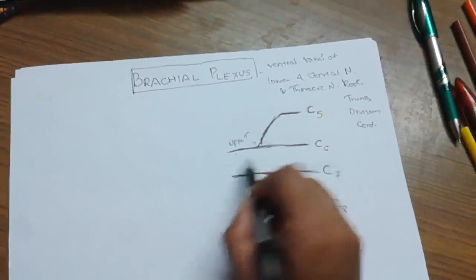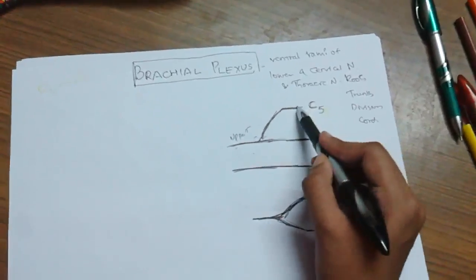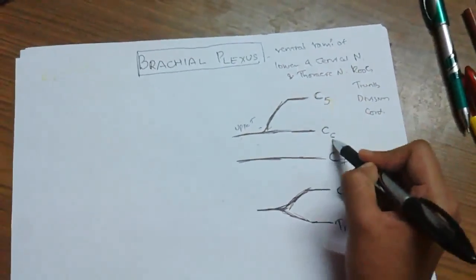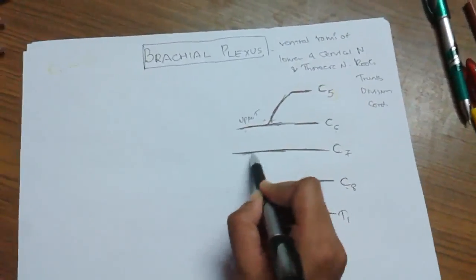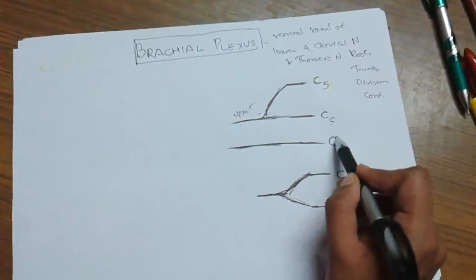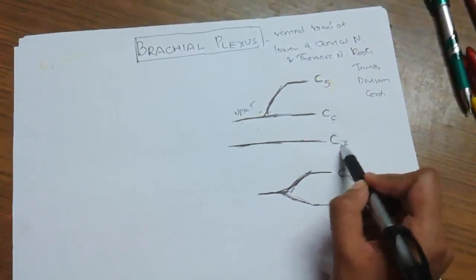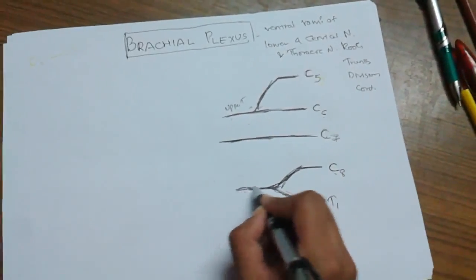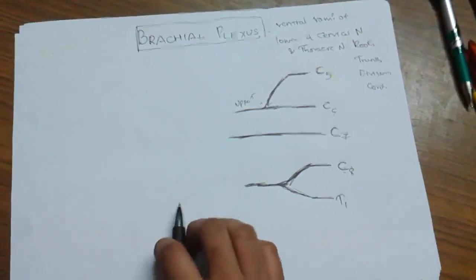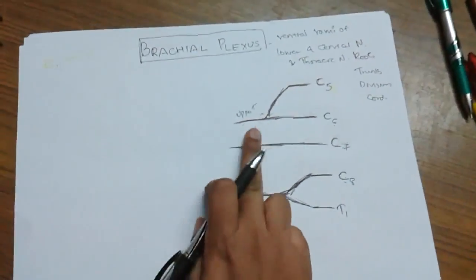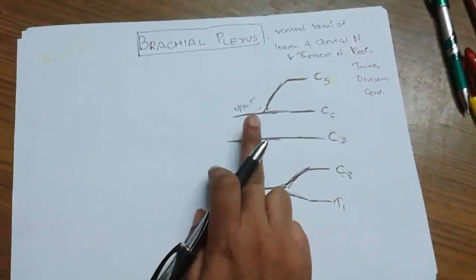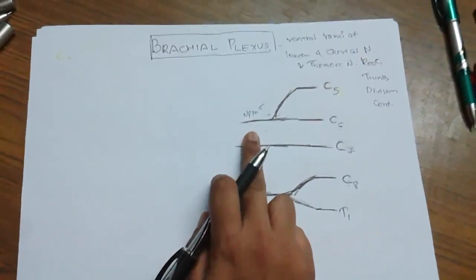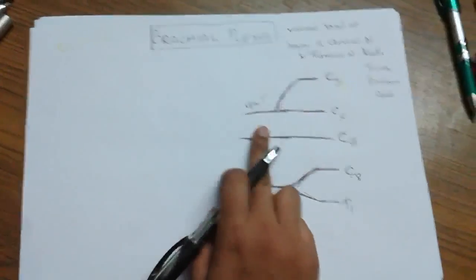So, upper trunk is formed by the combination of roots of C5 and C6. Middle trunk is formed by C7 root. Lower trunk is formed by the combination of C8 and T1. Each trunk is divided into two divisions: anterior and posterior.